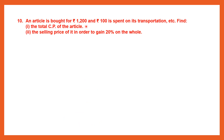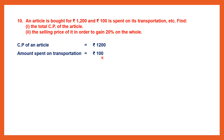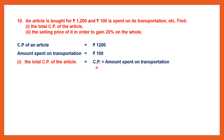Question 10. An article is bought for Rs. 1,200, and Rs. 100 is spent on its transportation. Find two answers: first, the total cost price of the article. Cost price is given and the amount spent on transportation is also given. Total cost price equals cost price plus transportation: 1,200 plus 100 equals Rs. 1,300. So the total cost price is Rs. 1,300.